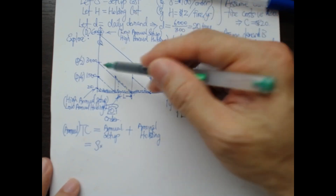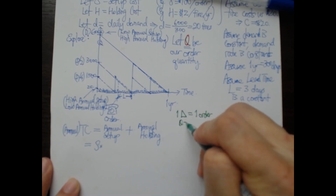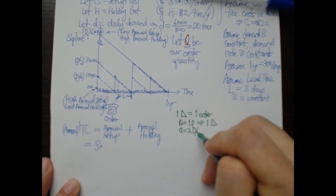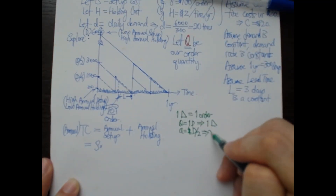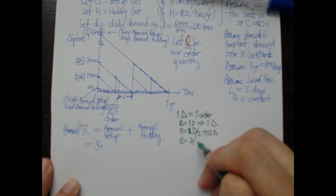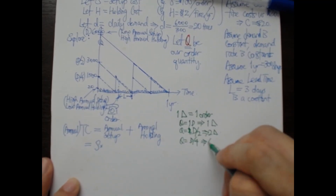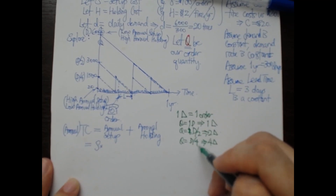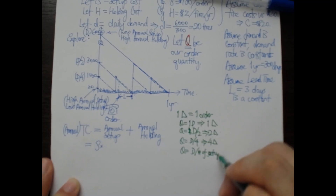There will be two triangles, which means we'll have two orders. If q equals D, we get one triangle — the one large triangle strategy. If q equals D/2, we get two triangles in a year. If we order a quarter of the annual demand every time, we'll have to order four times and see four triangles. So the number of orders is D divided by q — that is, number of setups equals D over q.